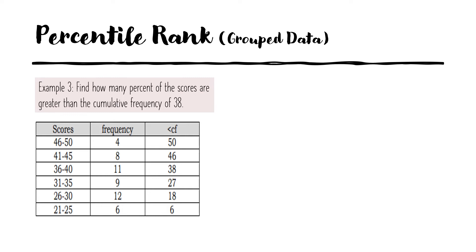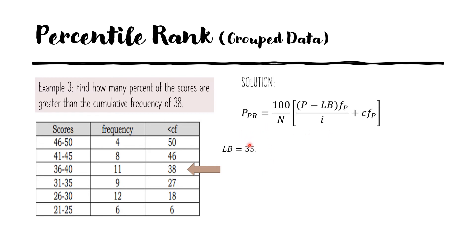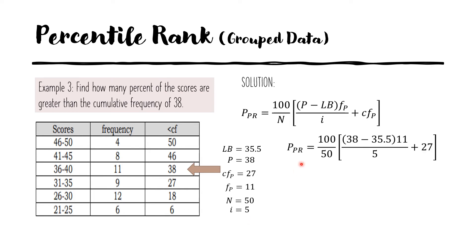Find how many percent of the scores are greater than the cumulative frequency of 38. The class interval having the cumulative frequency of 38 falls under 36 to 40. Applying the formula, we first identify: lower boundary LB is 35.5, P is 38 (the raw score), CF_P or the less-than cumulative frequency is 27, the frequency of the percentile class f_P is 11, N is 50, and the class size I is 5. Substituting: 100 over 50 times the quantity of (38 minus 35.5) times 11 over 5, plus 27.